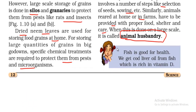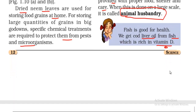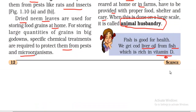Fish is good for health. We can get cod liver oil from fish. The question is: where does fish liver oil come from? From fish. And fish contains Vitamin D. So the question is: who gets Vitamin D from fish?